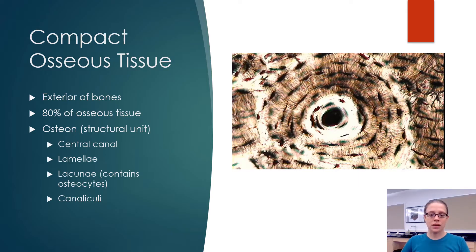Compact osseous bones are made up of osteons, that's the structural unit of compact osseous tissue. An osteon is this entire circle. Inside each individual osteon you have in the center your central canal and then around the central canal you have lamellae. You can think of lamellae like the rings on a tree.